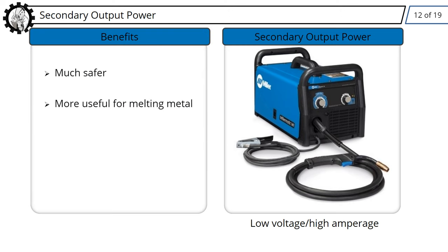Although they're typically more expensive, some machines can produce both constant voltage and constant current for multiple processes. This gives you maximum flexibility to switch between welding processes.